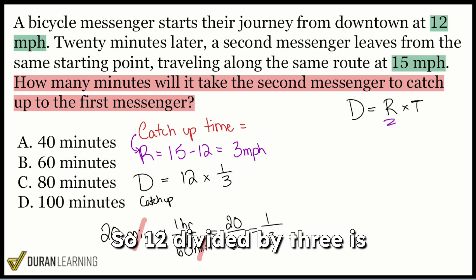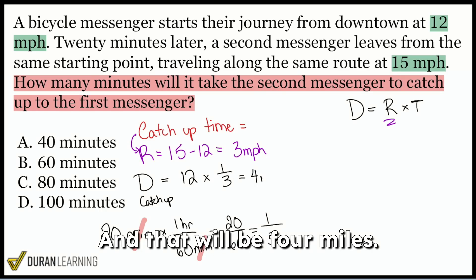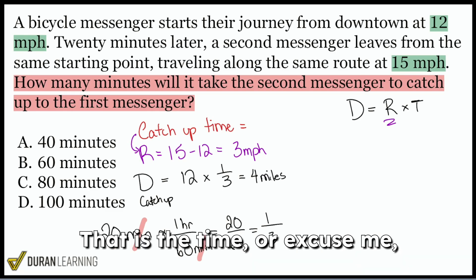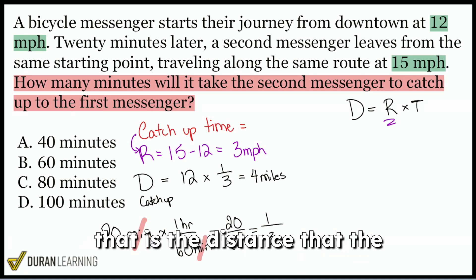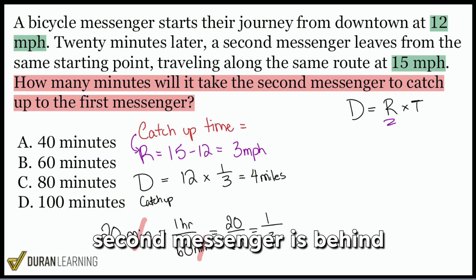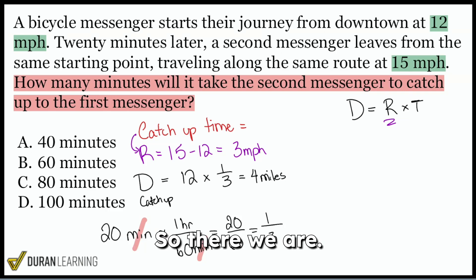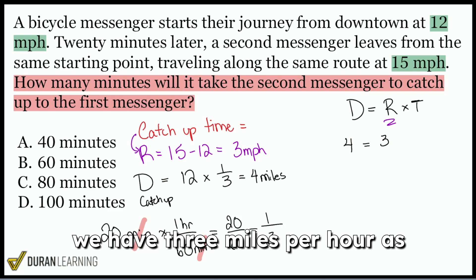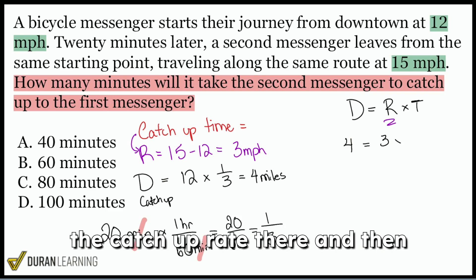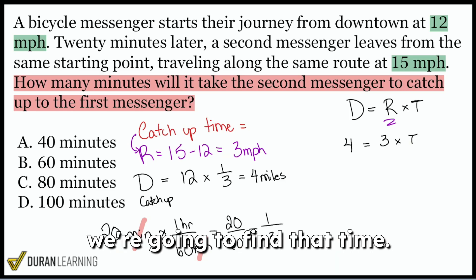So 12 divided by three is what we're looking at. And that will be four miles. That is the distance that the second messenger is behind once he starts pedaling. So there we are.